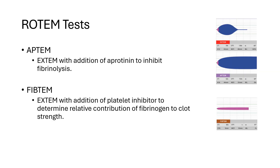The next test is Aptem — this combines Extem with aprotinin to inhibit fibrinolysis. Comparing Aptem and Extem will identify the presence of fibrinolysis and its severity. The last test is FibTem — this combines Extem with cytochalasin D, which is a platelet inhibitor, and determines the contribution of fibrinogen to clot strength. By comparing FibTem to Extem, we can determine the relative contributions of platelets and fibrinogen to overall clot strength, the MCF.